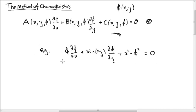We could take A equals phi. We could take B equals sine of x, y. We could take C equals x squared minus phi squared. They're perfectly good functions of x, y and phi. And this would give us a partial differential equation like the one we're interested in.